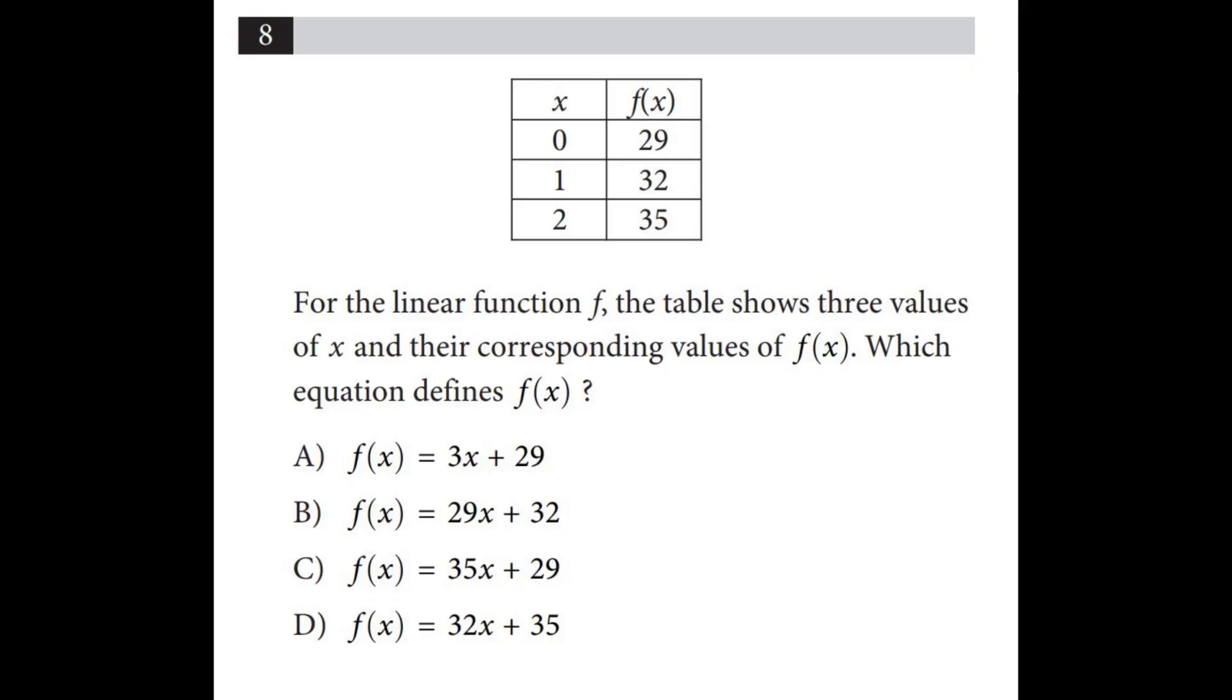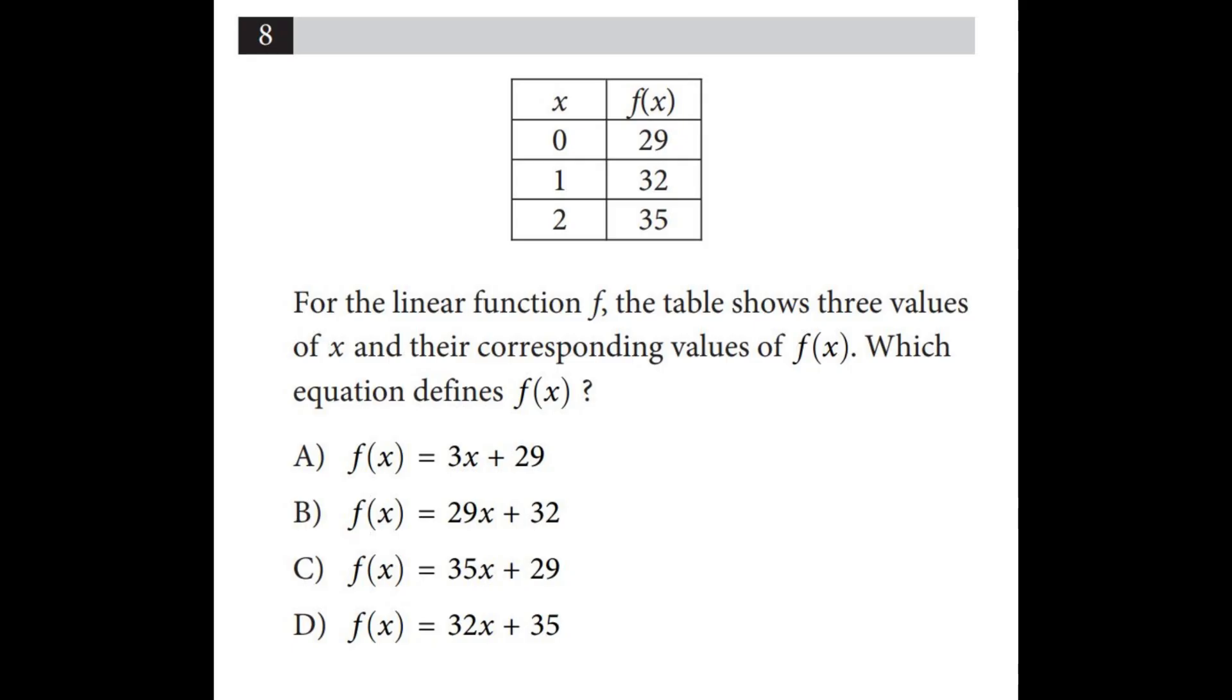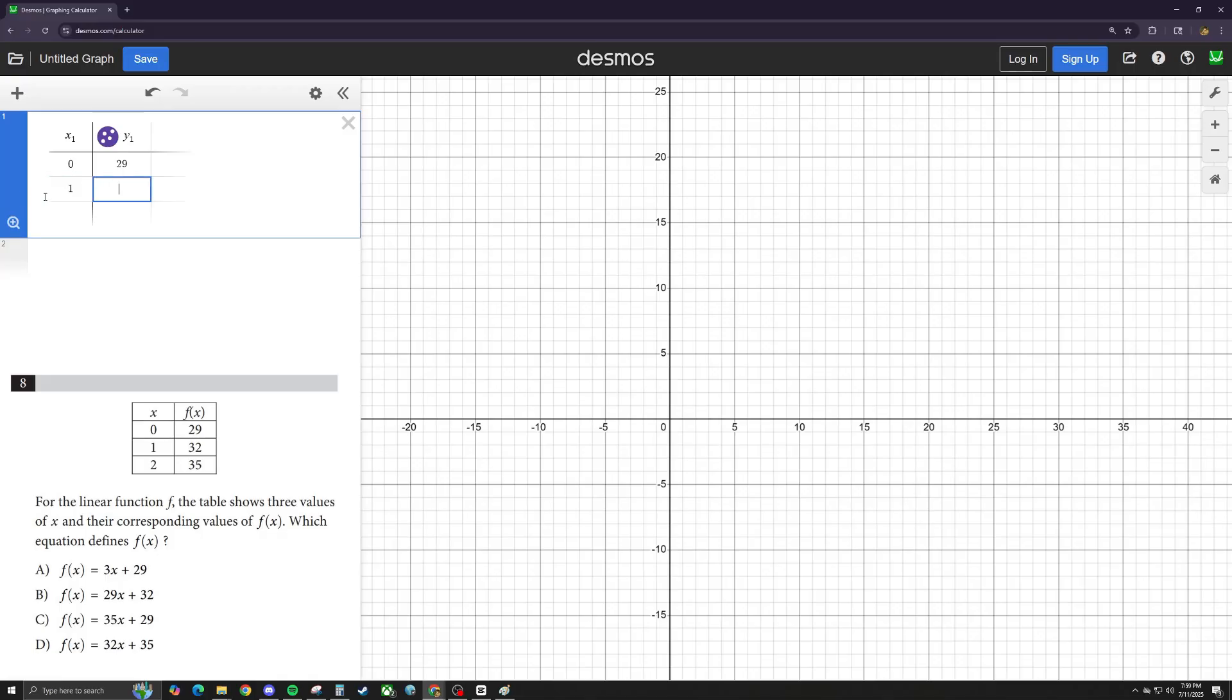Usually for a question like this, you would need to remember the formula for slope and how to find the y-intercept. Or you can just insert a table into Desmos, put in every single point that is given to you, and just click a little button and it gives you the equation of the line. And that's all you have to do.